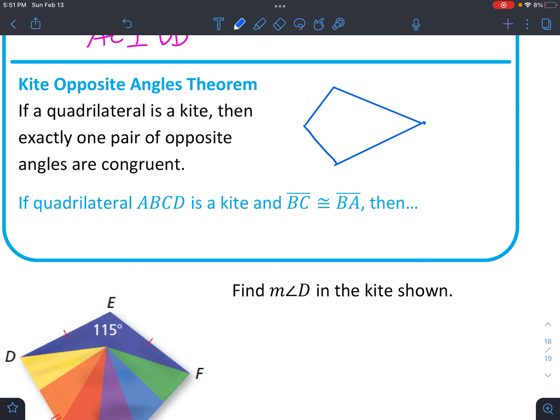So let's draw our standard kite. And it says exactly one pair of opposite angles are congruent. So it's these angles here. It's like the angles that join the two sides that aren't the same. That's how I think of it.